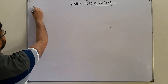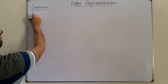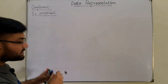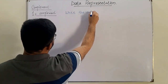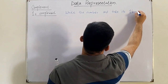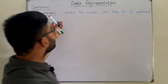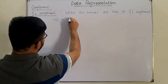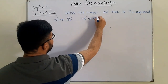Next is the one's complement form. To represent a negative number in one's complement, you simply write the positive number and take its one's complement — that is, invert all the bits. For example, plus six is 110 in binary. Taking the one's complement gives 001, which represents negative six in one's complement form.